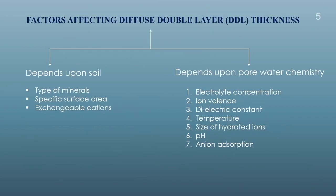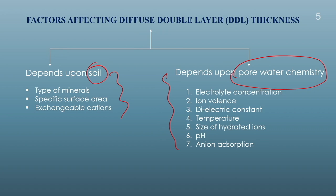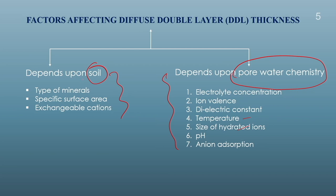There are two types of factors controlling the diffuse double layer thickness. The first depends on the soil itself, and the second depends on pore water chemistry — the water present in the pore spaces of the soil particles. By changing the chemistry of that pore water — electrolyte concentration, valency, dielectric constant, temperature, or size of hydrated ions — we can control the diffuse double layer thickness.